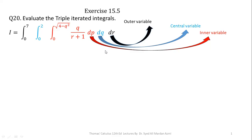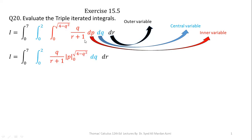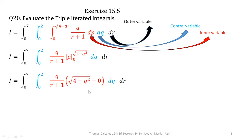In multivariable calculus, whether performing integration or partial derivatives, if you are dealing with one variable, all other variables behave as constants. With respect to p, q and r are constant. We will first perform integration with respect to p, so q over r plus 1 is constant, and the integration of dp is p only. Applying the fundamental theorem of calculus — upper limit minus lower limit — gives us q over r plus 1 into square root of 4 minus q square.